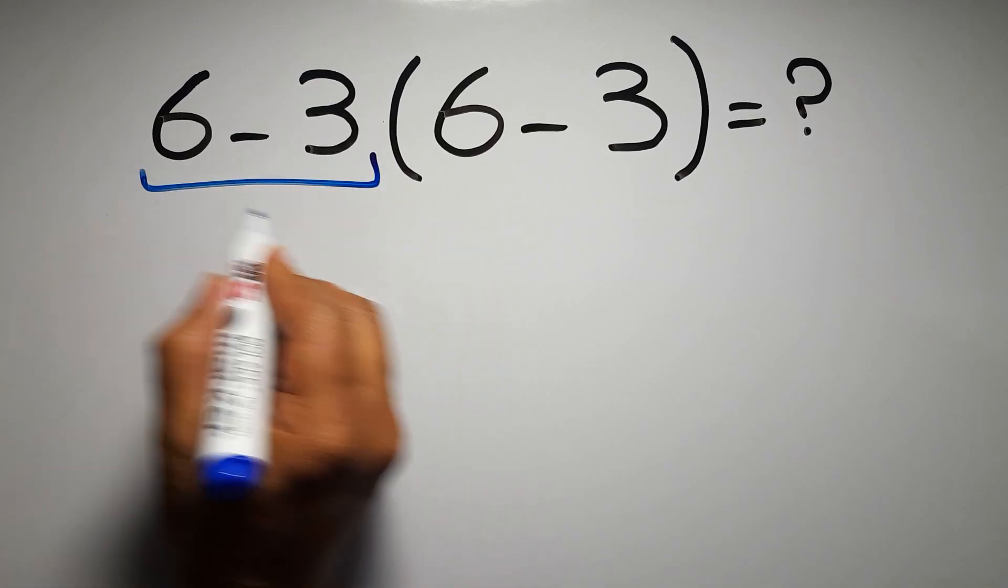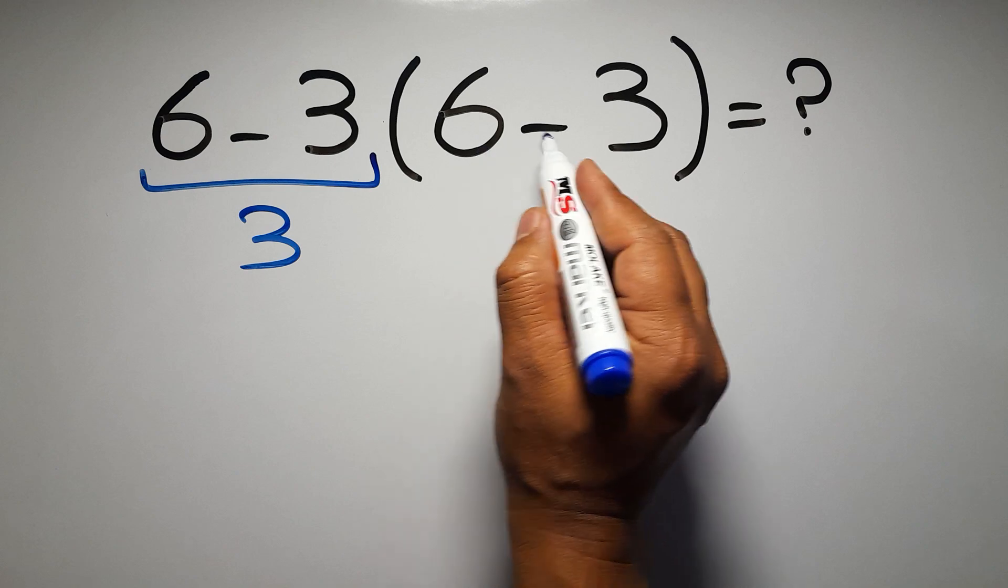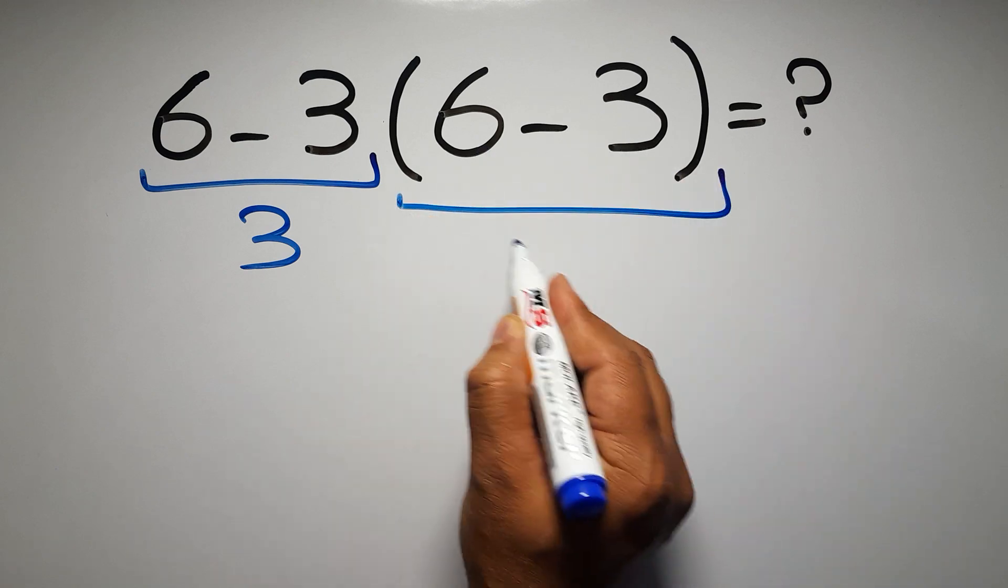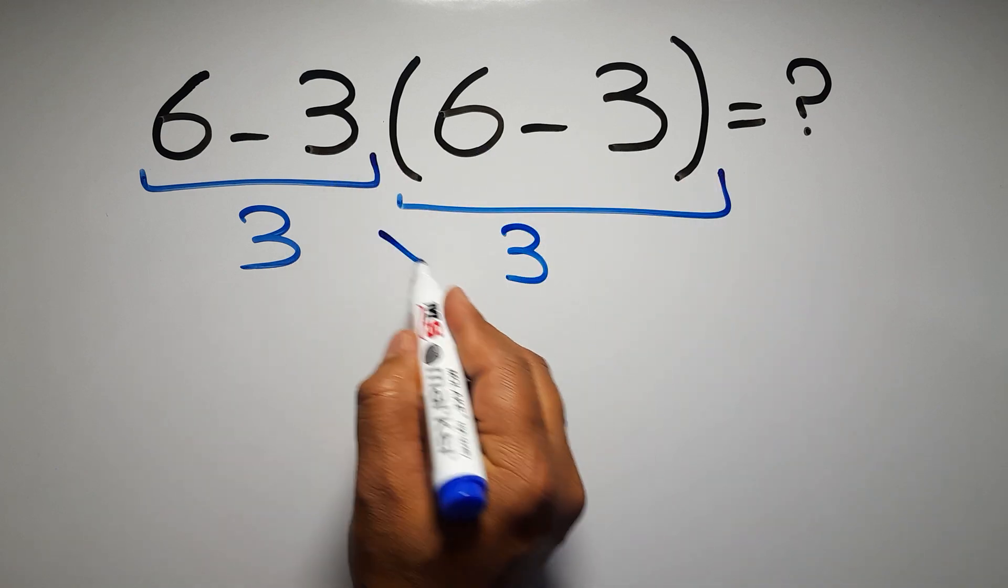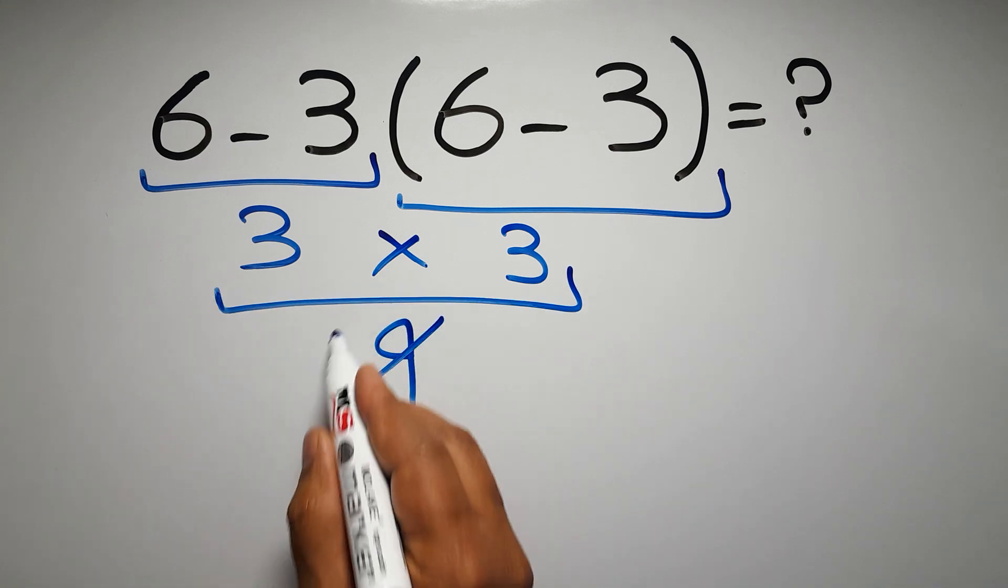6 minus 3 gives us 3, and again here inside these parentheses, we have 6 minus 3. So 3 times 3 gives us 9, but this answer is not correct,